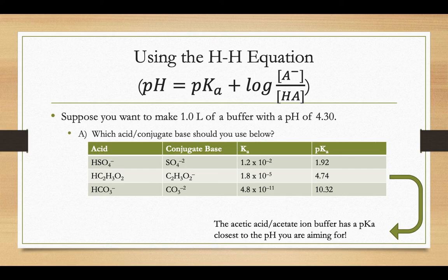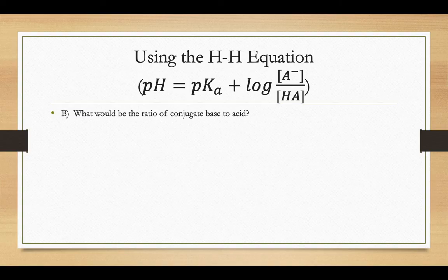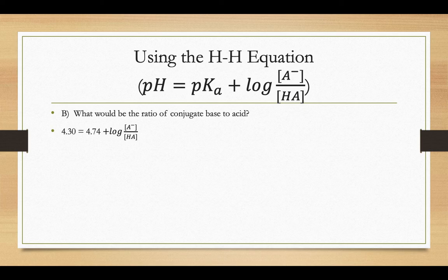Then we could just fine-tune that buffer with our ratios of A minus to HA to get it to be right at the pH that we want it to be. So what would that A minus to HA concentration ratio have to be? Well, we wanted the pH to be 4.3 and the pKa of our acetic acid was 4.74. So if we plug in those two numbers, we have the log of A minus over HA.